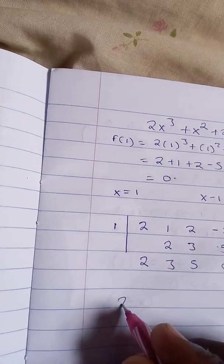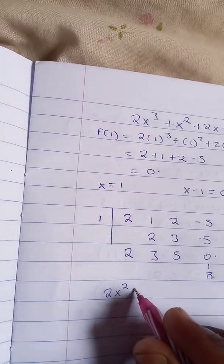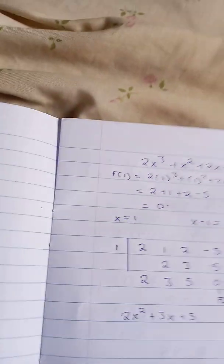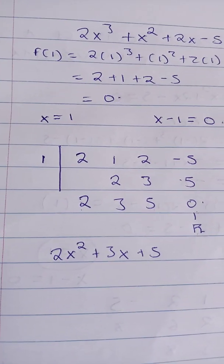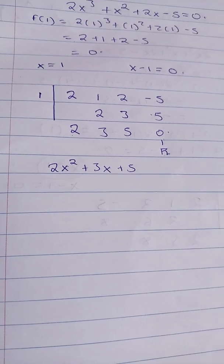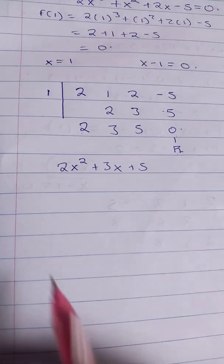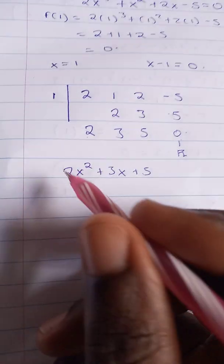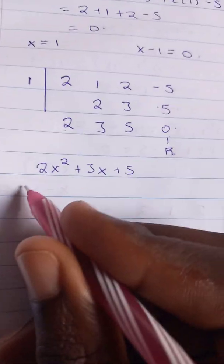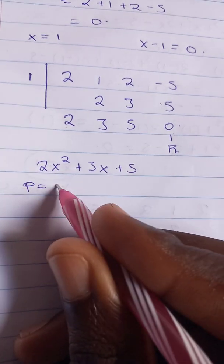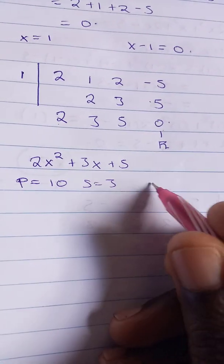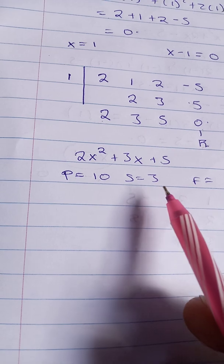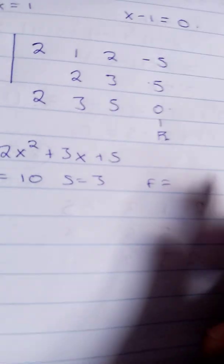So therefore 2x² + 3x + 5. This is the other factor that we can try out to factorize. The next stage is to factorize this. Try out the product and the sum. The product is 2 × 5 = 10, the sum is 3. What numbers can you multiply to give you 10 and add to give you 3? In this case, this function has got no factors.